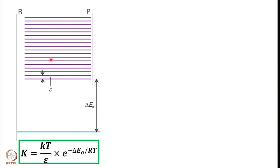By using an expression for equilibrium constant, which is equal to the ratio of the molecular partition functions corresponding to products and reactants into exponential minus delta E naught by RT, and since the reactant has only one energy level so Q is 1, we used the partition function for a uniform ladder of energy levels and after substitution we got the result that equilibrium constant is equal to Boltzmann constant into temperature divided by the energy separation into exponential minus delta E naught by RT.